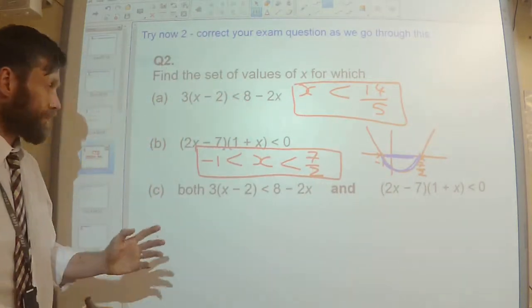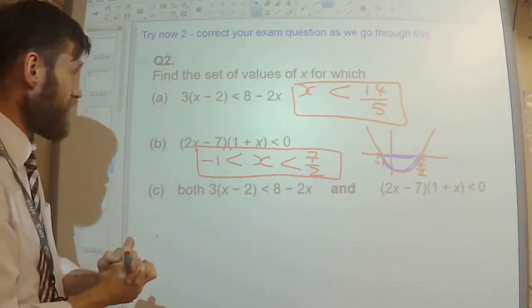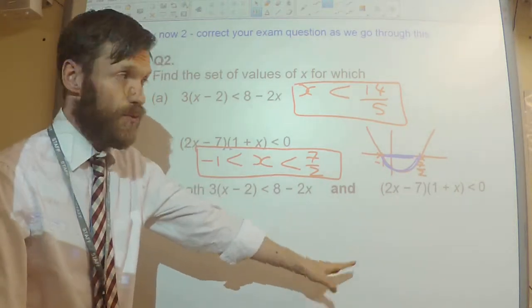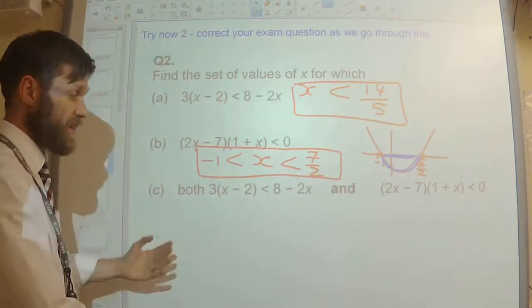Okay. And finally, part C. I need to find the set of values for x where both of these things are true. So to do this, I'm going to draw a number line.